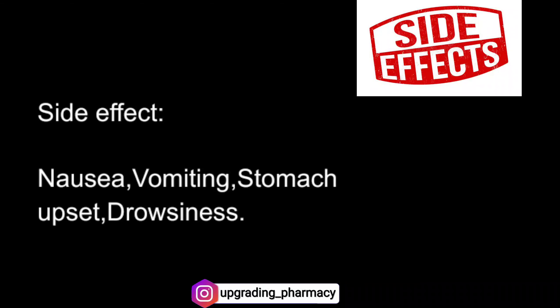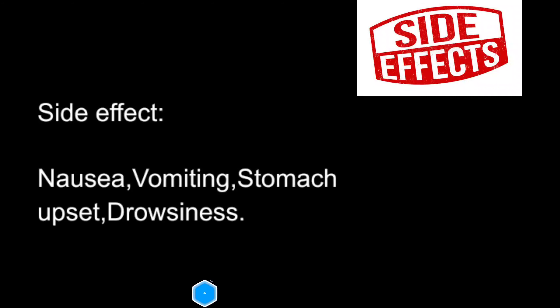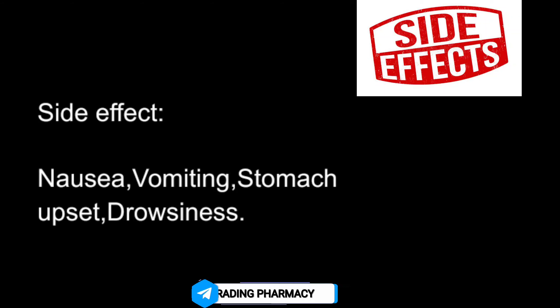Side effects of allopurinol drug include nausea, vomiting, stomach upset, and drowsiness. Nausea is a sensation of or feeling of wanting to vomit. Vomiting is the excretion of food material by mouth. Stomach upset is discomfort in the abdominal area, and drowsiness is excessive sleepiness.